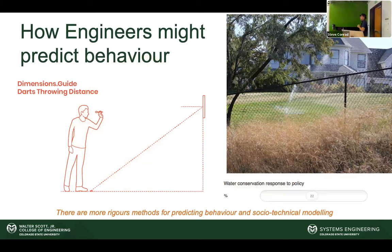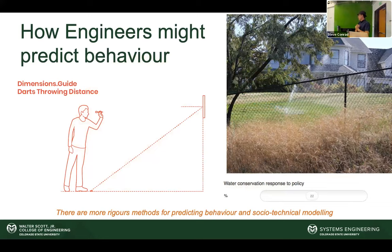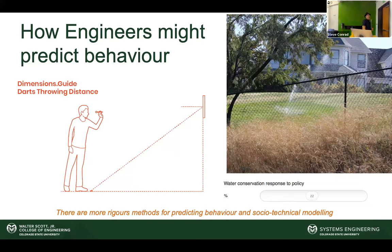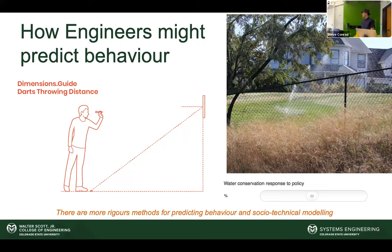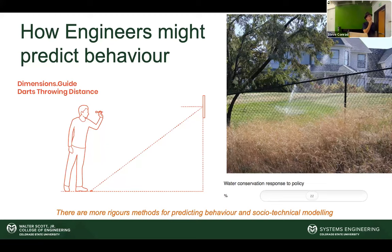When I talk to engineers who haven't thought about this, they might say: we need a human parameter. So they put a slider from zero to a hundred, set it to 22% because they read a paper about water conservation in East Angolia, and publish the model. At least it's something, but this approach is basically just throwing a dart at the behavior.